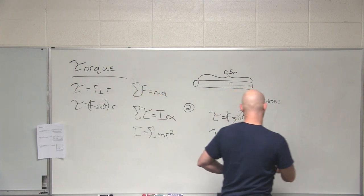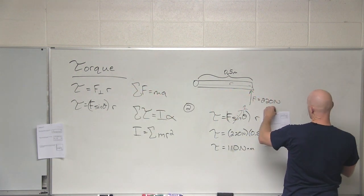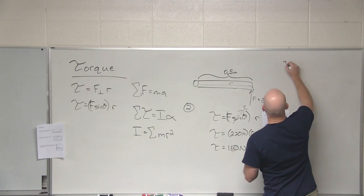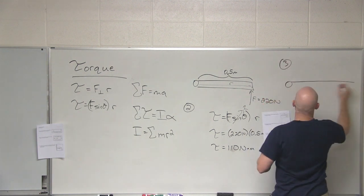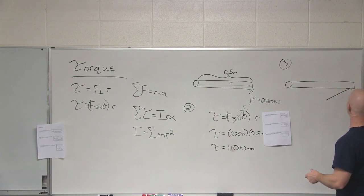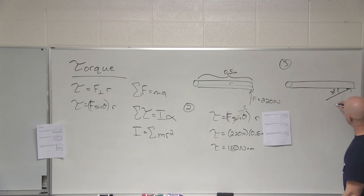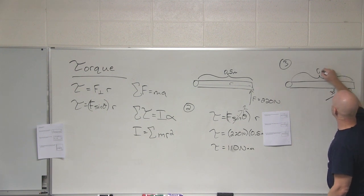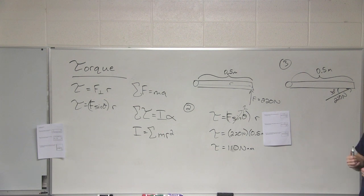Cool, number 3 deals with the same door. But now the force we're going to apply is at an angle of 30 degrees. So it's still 220 newtons, still 0.5 meters from the hinge. And the question is now how much torque is generated?